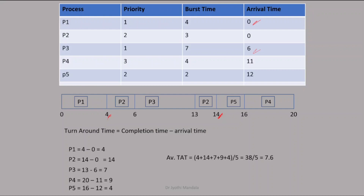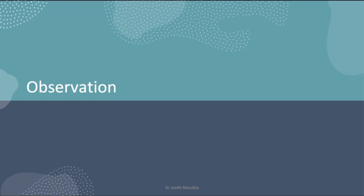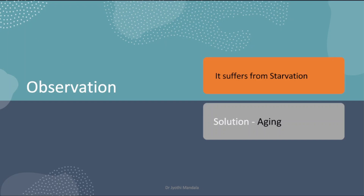I hope you all are clear with the calculations of waiting time and turnaround time while using this priority preemptive scheduling algorithm. The observation here is that it suffers from starvation. If a CPU is executing one process and a higher priority process comes, the CPU switches to it, suspending the current execution. If yet another higher priority process arrives, the earlier process has to keep on waiting because of its lower priority — this is called starvation.